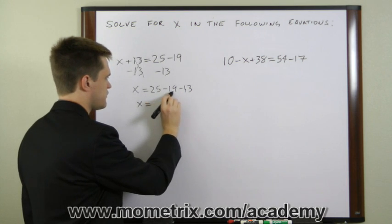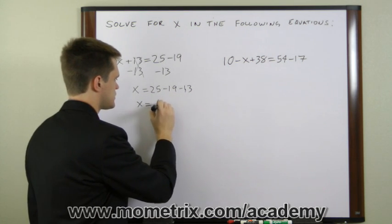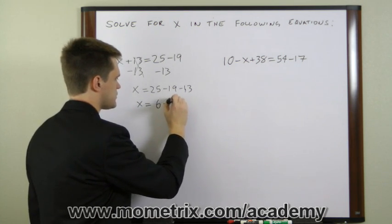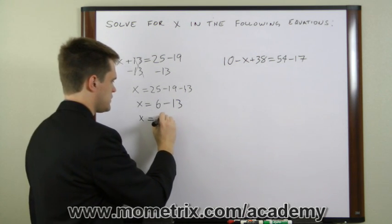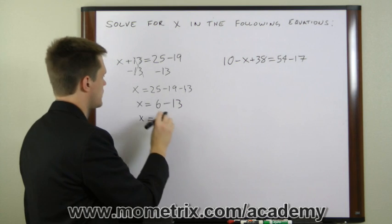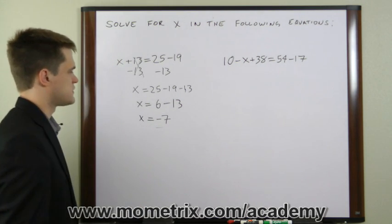X equals 25 minus 19 is 6. So x equals 6 minus 13. And 6 minus 13 equals negative 7. So in this equation, x equals negative 7.